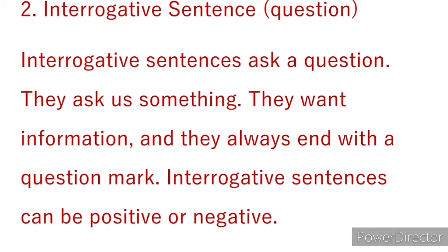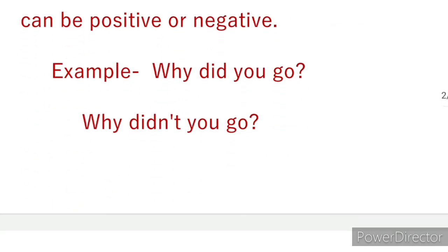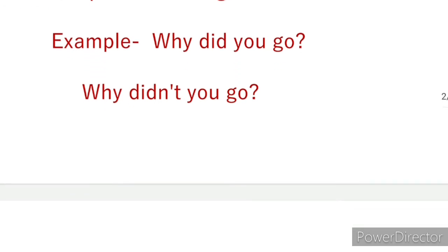The second type is the interrogative sentence, which contains a question. Interrogative sentences ask us something — they want information — and they always end with a question mark. They can be positive or negative. For example, 'Why did you go?' or 'Why didn't you go?'